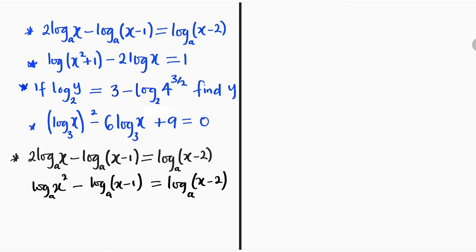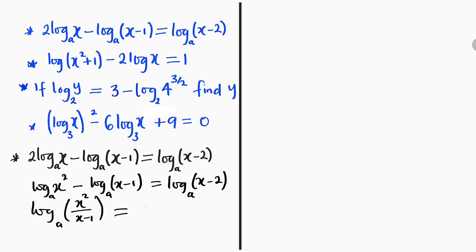Another law of logarithm says that if you have two terms related with a subtraction and the two terms have the same base, you are always free to assign them a single log — divide the first expression by the second one. So this becomes log of x² divided by (x minus 1) base a, and to the right we have log of x minus 2 base a. We can see we have only two expressions, and both of them have a common log.